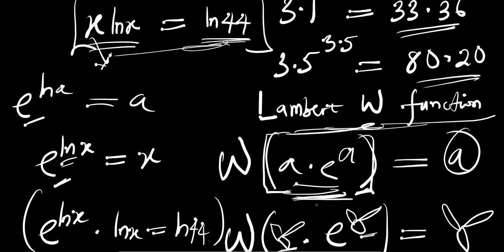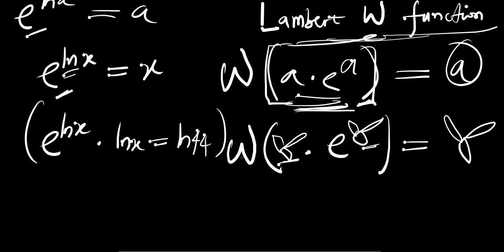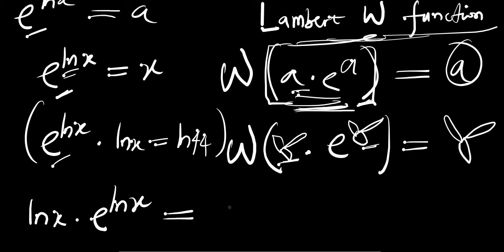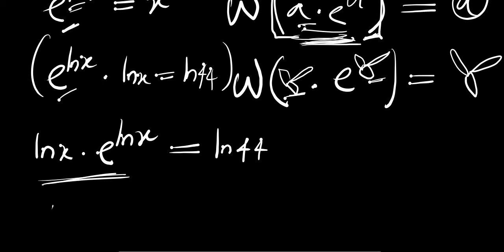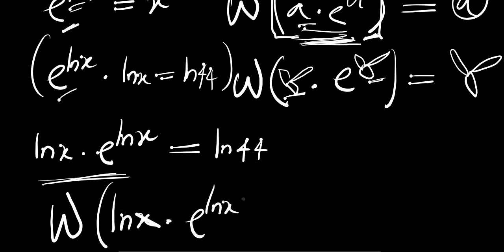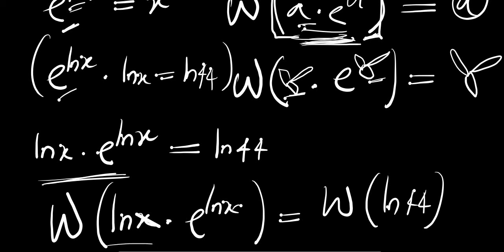The aim is to get this into the form a times e to the power of a. We rearrange: ln(x) times e to the power of ln(x) equals ln of 44. This is exactly in the required form. So we can now apply the Lambert W function to both sides: W of ln(x) times e to the power of ln(x) equals W of ln(44).